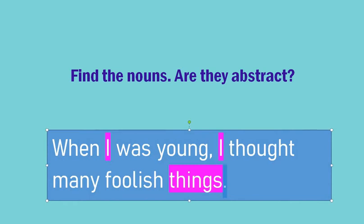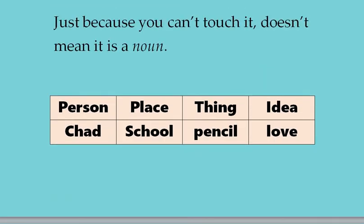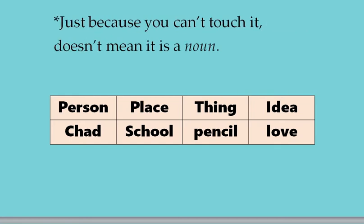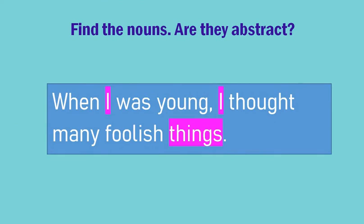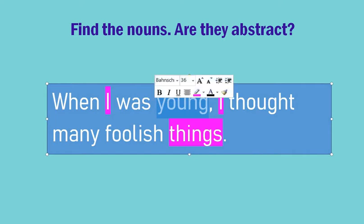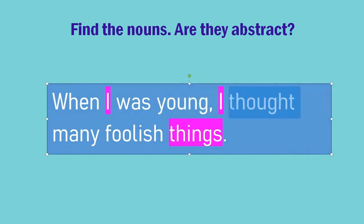Now, is 'things' a concrete or abstract noun? Can you touch things? Yes, it is possible. And 'I' — a person — yes, that's someone standing right in front of you. Those are going to be concrete nouns. But I want to take us back to that reminder: just because you can't touch it doesn't mean it is a noun. Are there things in here you can't touch? I can't touch 'young,' I can't touch 'thought' — but those aren't nouns, and so they are not abstract nouns.